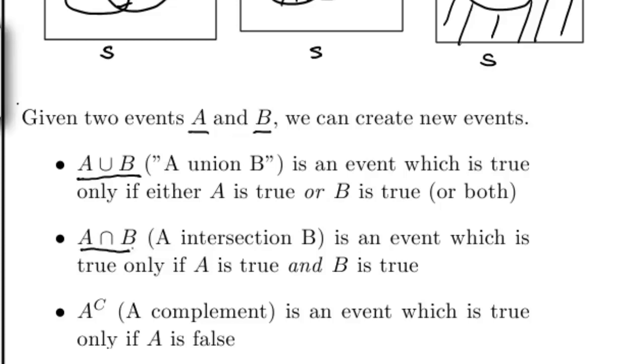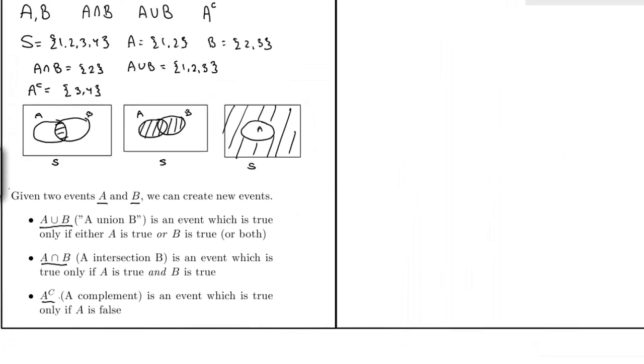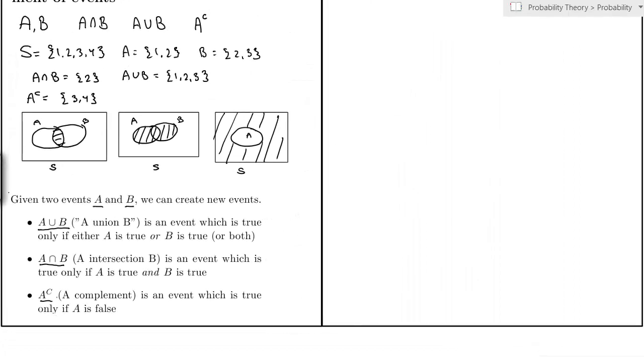A intersection B would be a new event, which is true if both A and B are true. And A complement would be a new event, which is true if and only if A is false.